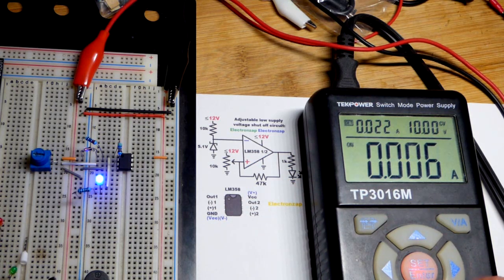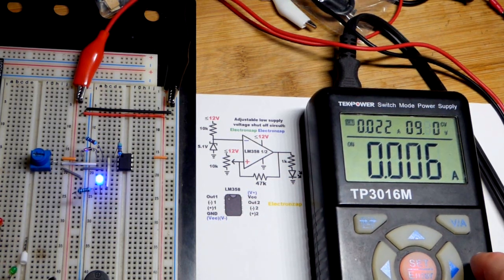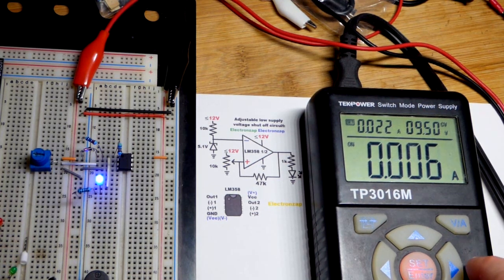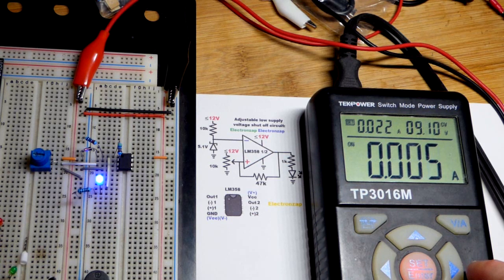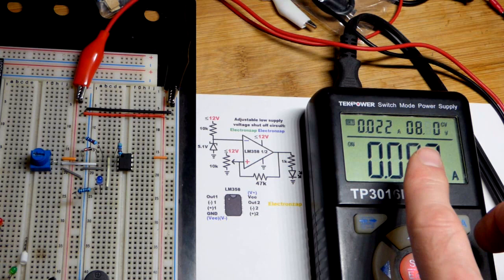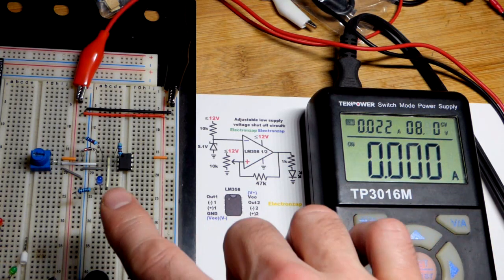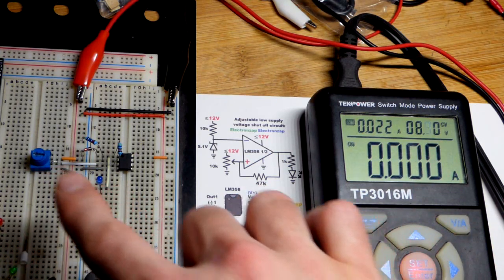We're turning the voltage down, and somewhere about 9.1 volts is where I have the trim pot set. We're at 9 volts and still have a high output. There we go, dropped a little bit below 9 and the LED turned off. We could adjust it with the trim pot.